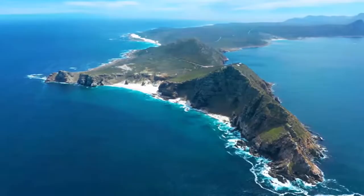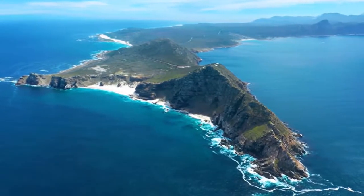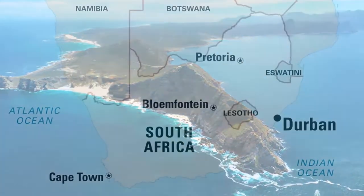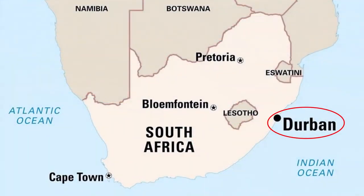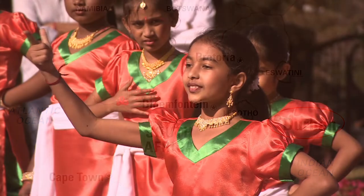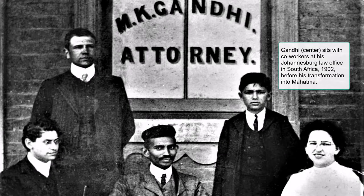Nowadays, the largest and most well-established community, counting about 1.3 million people, lives in South Africa. The majority of them live in and around Durban, which is one of the largest Indian cities outside India's borders. The Indian community in South Africa is one of the oldest and most numerous in the whole continent. The most notorious member of this community was certainly Mahatma Gandhi, who began here in South Africa his struggle against the British Empire that eventually led to the independence of India.